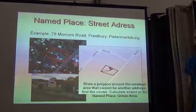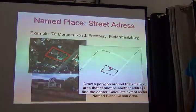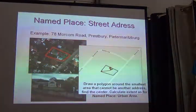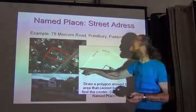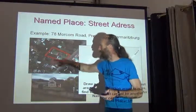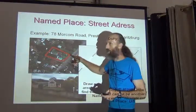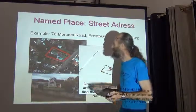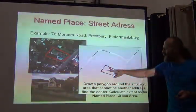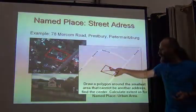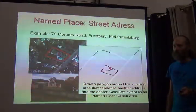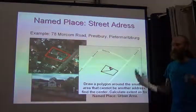Then we go to the opposite extreme — something like a street address. The street address is defined by the plot of land owned by that person, and it's very small. You do the same thing: draw the polygon, find the center, and measure to the farthest distance. Getting smaller still is a junction — here, the junction of the Calvinia road and the Sutherland road where they come together.